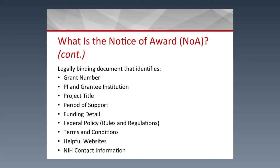The Notice of Grant Award is a legally binding document. It includes the grant number, the PI name, the grantee institution, project title, the period of support, funding information, the federal policy, and the rules and regulations that apply.